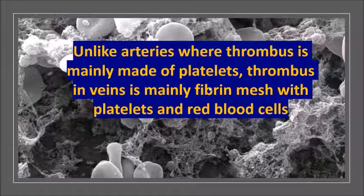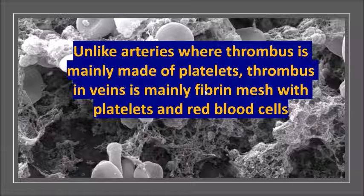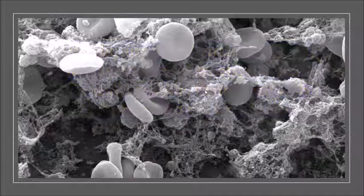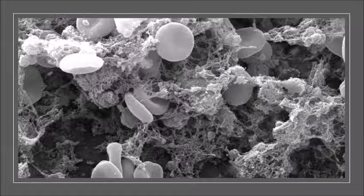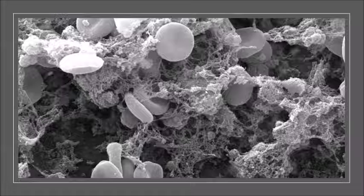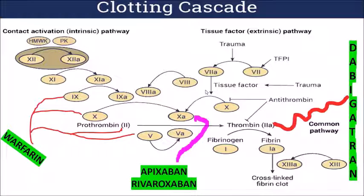Anti-platelets are mainly composed of activated platelets which stick together, forming a platelet plug. But here it's mainly a fibrin mesh with some trapped red blood cells and platelets. If you target the conversion of fibrinogen to fibrin, you basically reduce the tendency for the blood to form a clot, reducing the risk of deep vein thrombosis and pulmonary embolism.